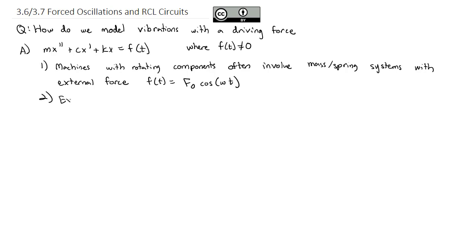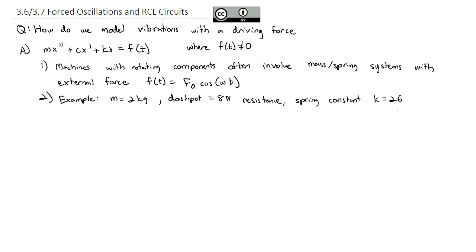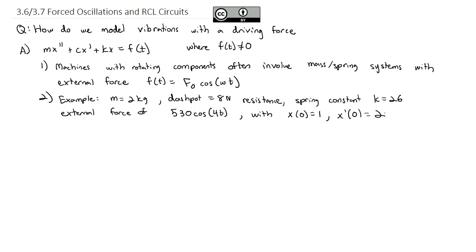Let's do an example. We have a mass of two kilograms, a dashpot that provides eight newtons of resistance, and a spring constant k equals 26, with an external force of 530 cosine of 4t being applied. Initial conditions are: initial position x(0) = 1 meter to the right of equilibrium, and initial velocity x'(0) = 2 in the positive direction.